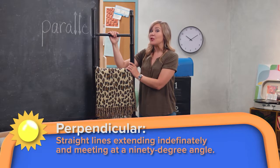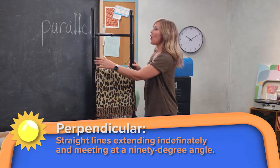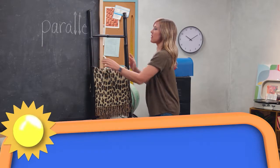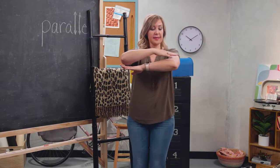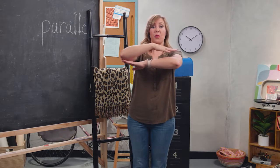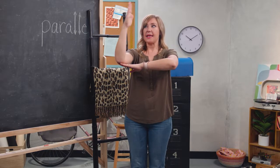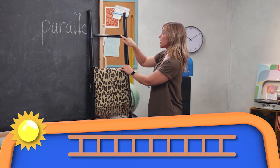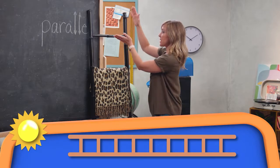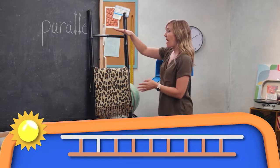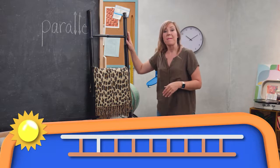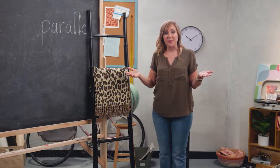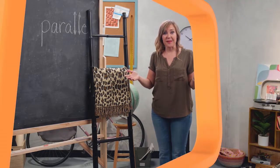There's also an example of perpendicular lines on this ladder. Perpendicular lines do come together and meet, and when they do it's always at a right angle. With perpendicular lines, you have your bottom line and then at 90 degrees you have your other line. You can see it here on the ladder — every rung meets up with the side of the ladder and creates a perpendicular line.